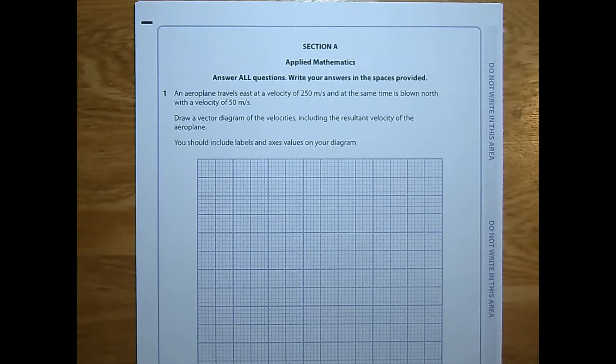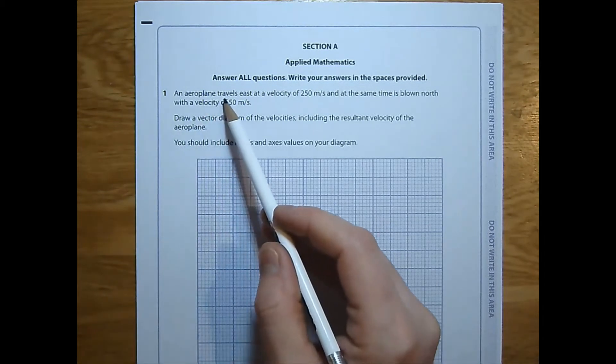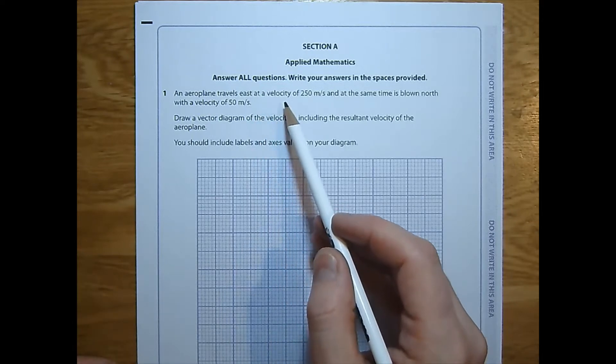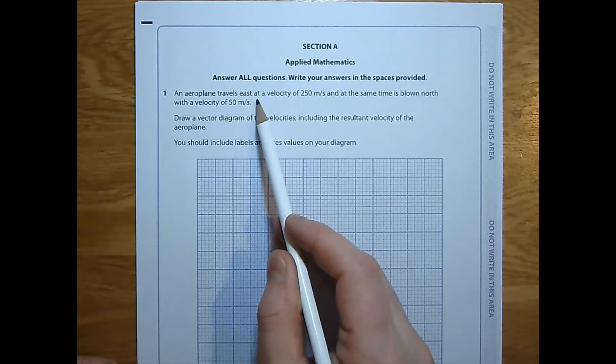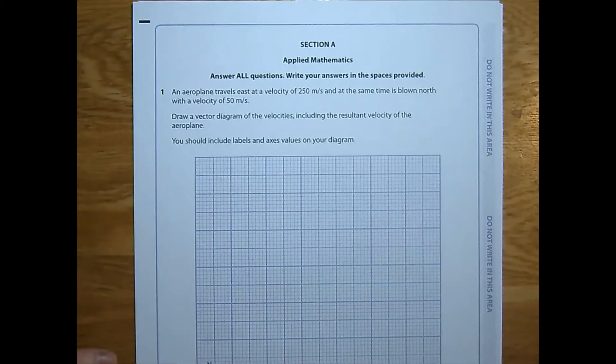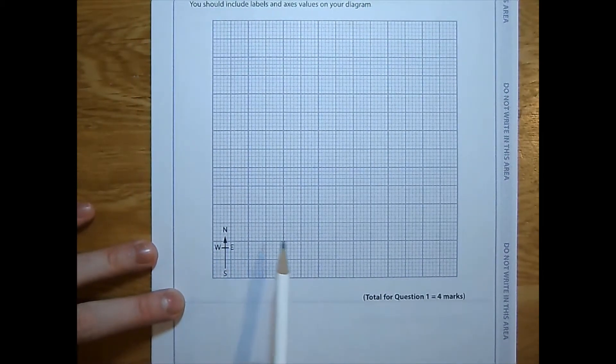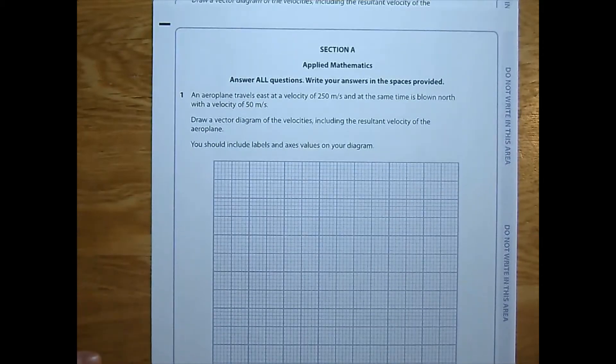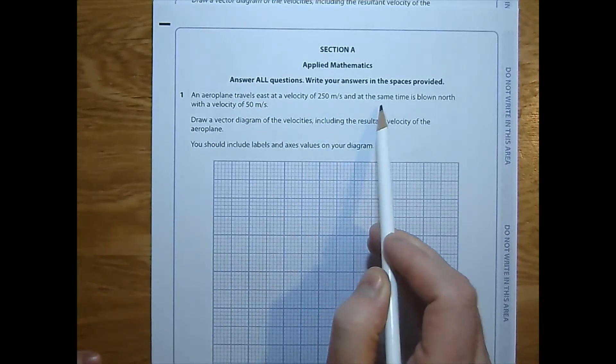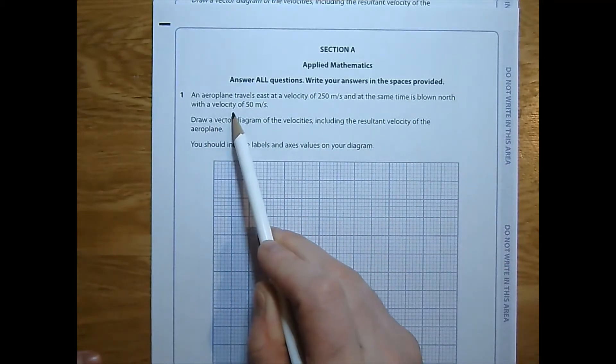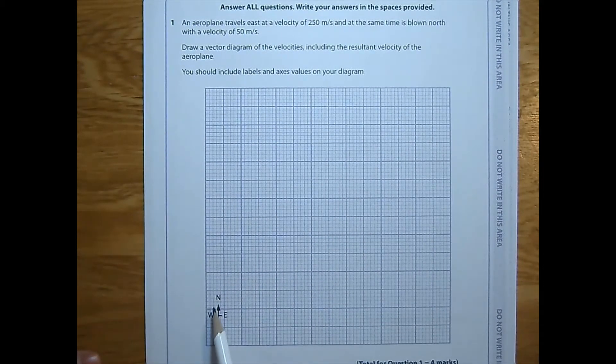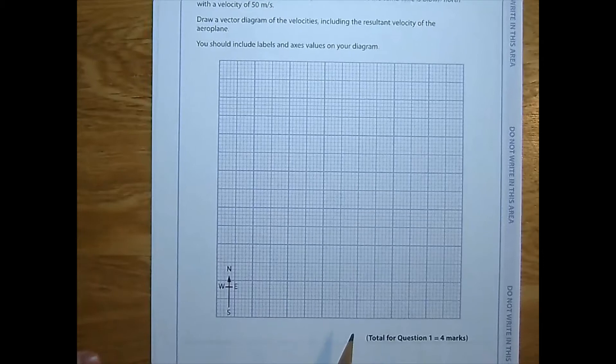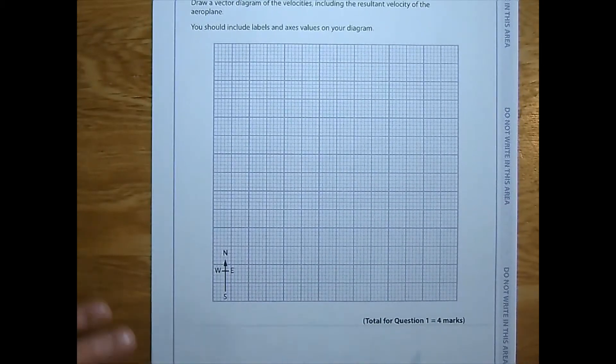January 2020, question 1. An aeroplane travels east at a velocity of 250 meters per second. Let's have a look east. That's indicated on the diagram below as being in this direction. And at the same time is blown north with a velocity of 50 meters per second. And on the diagram, north is indicated as up, standard way of showing that like you'd see on a map.